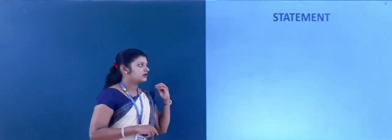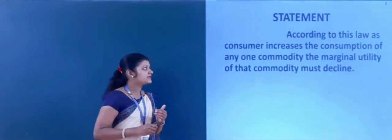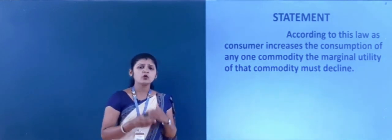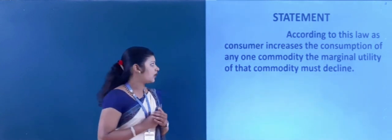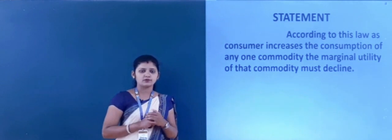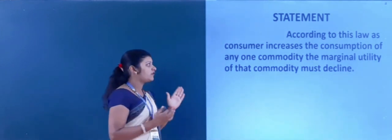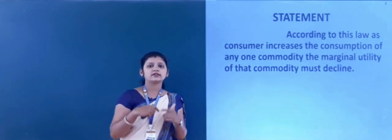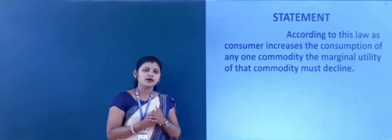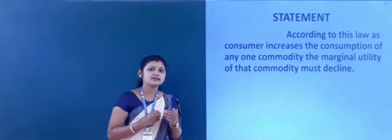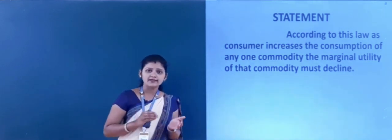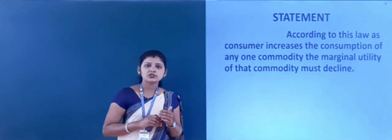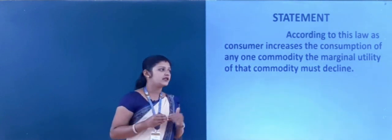Now let's see the statement of the law. According to this law, as a consumer increases the consumption of any one commodity, the marginal utility of that commodity must decline. Marginal utility is the extra or additional satisfaction that a consumer gets by consuming one additional unit of a commodity. As a consumer increases the consumption of a particular commodity, his marginal utility must decline.